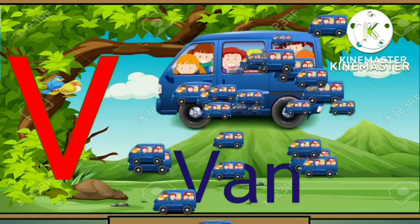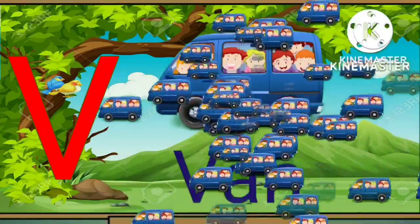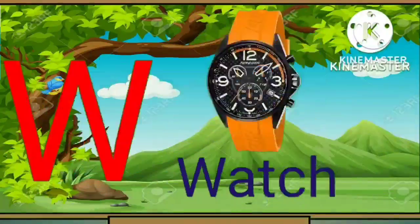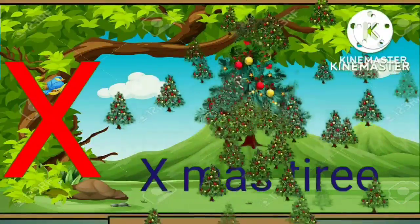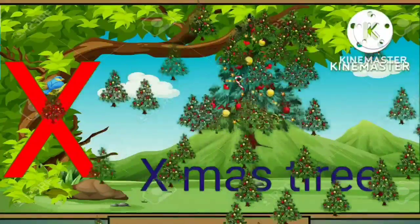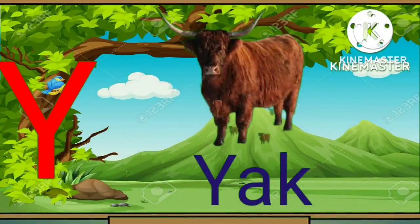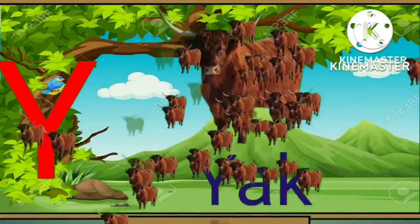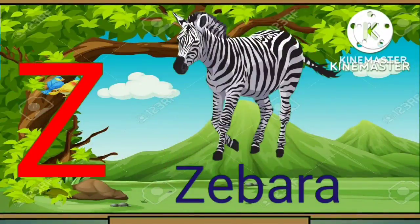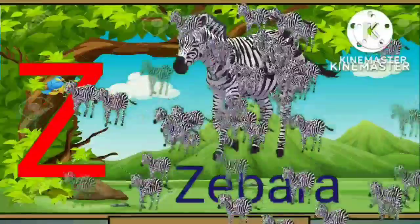V for violin. W for watch. X for x-ray. Y for yak. Z for zebra.